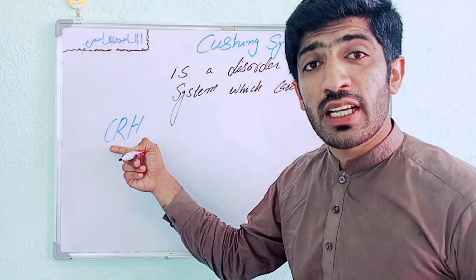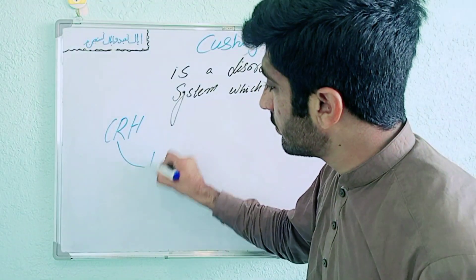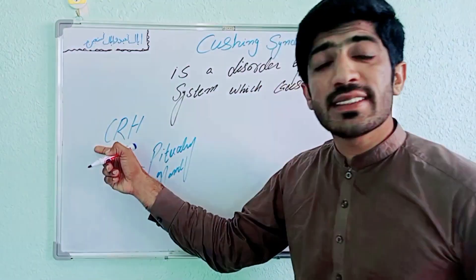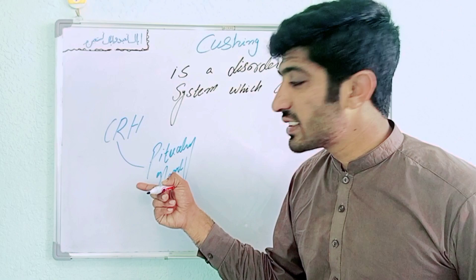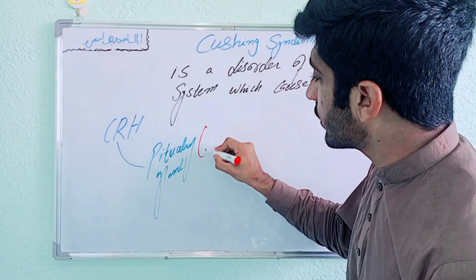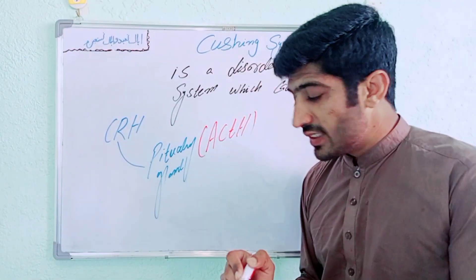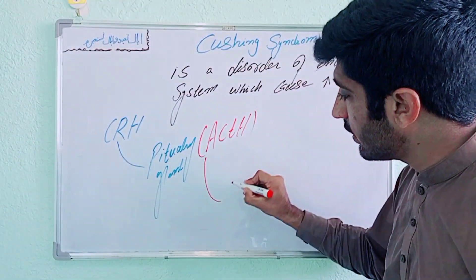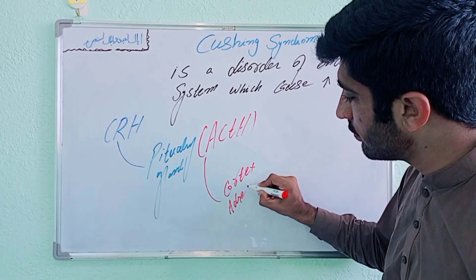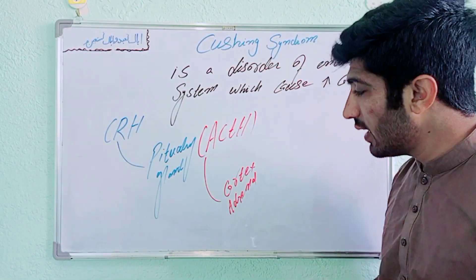The hypothalamus creates CRH — Corticotropic Releasing Hormone — and sends it to the pituitary gland. CRH comes to the pituitary gland and stimulates it to create a hormone called ACTH — Adrenocorticotropic Hormone. This ACTH then comes to the cortex region of the adrenal gland and stimulates it to create a hormone called cortisol.